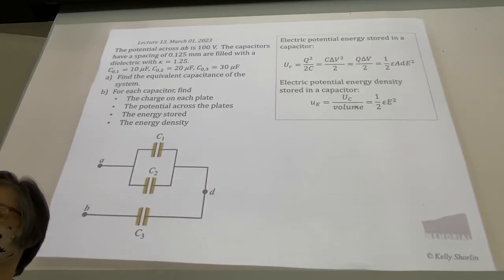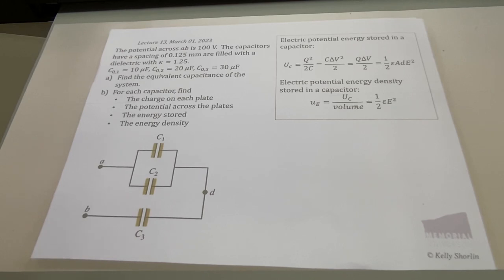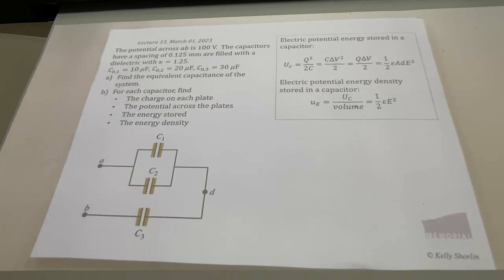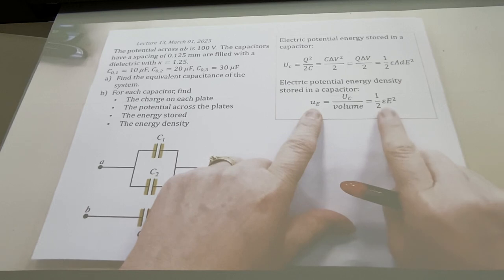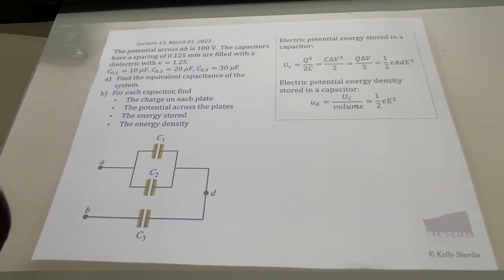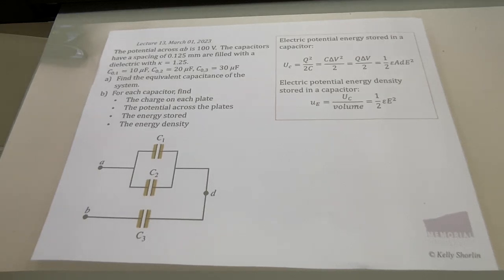Okay, it's time for us to get started. What we were talking about last time was electric potential energy stored in the capacitor — we got our equations for that — and then electric energy density, which was the energy stored in an electric field per unit volume. Today we're going to do one last example, then get through Chapter 25 and get started on Chapter 26. Does anybody have any questions? No? Okay, let's get going.